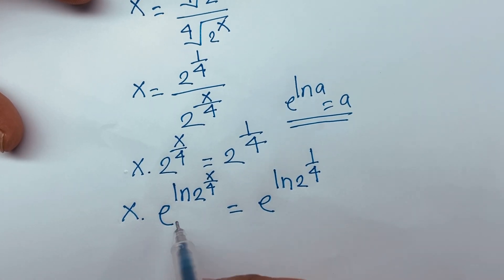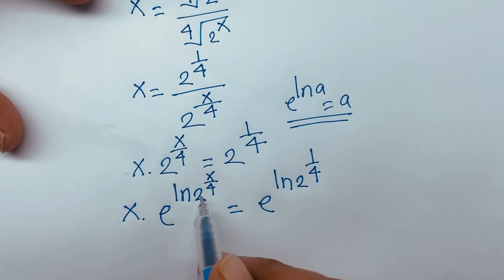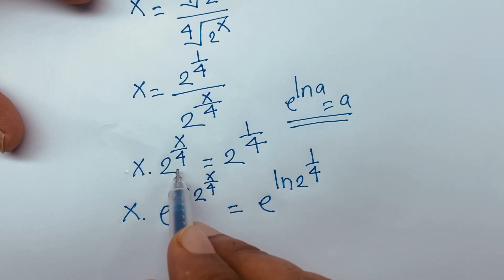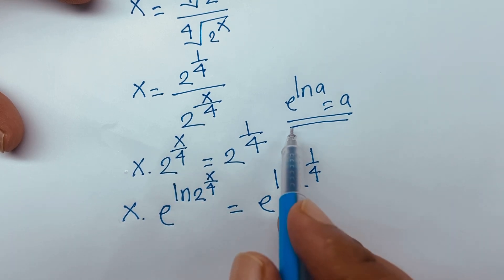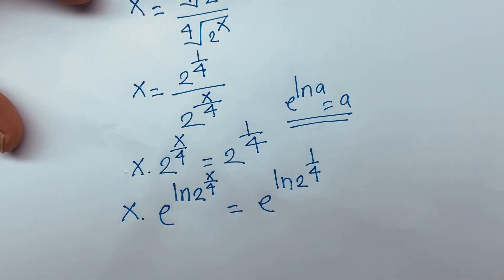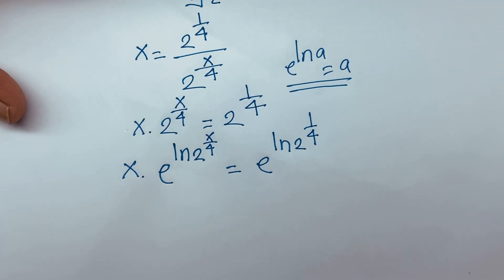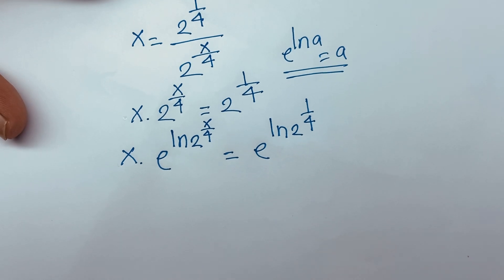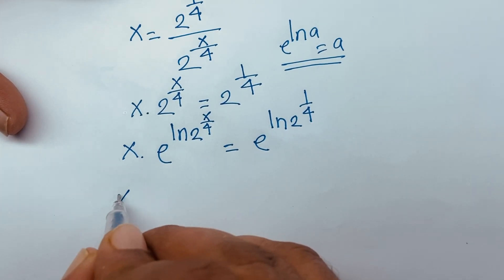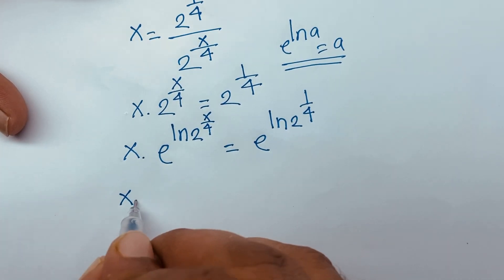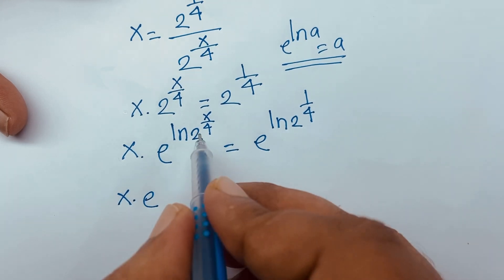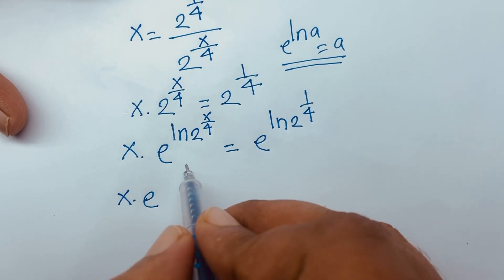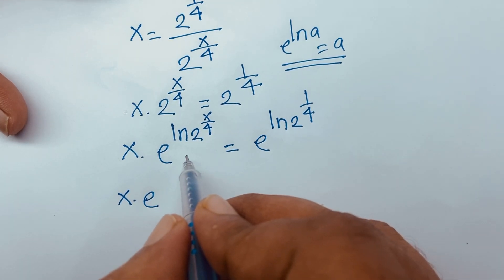So e to the power ln(2^(x/4)) equals 2 to the power x over 4, because e to the power ln a is equal to a. At this moment I can say it will be x times e to the power — and according to logarithmic rules, I can say the exponent can be brought down.